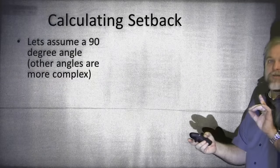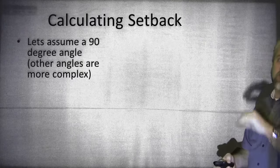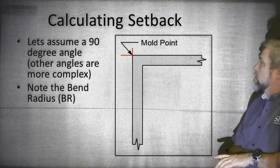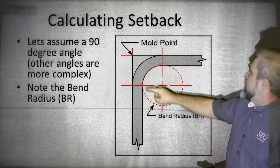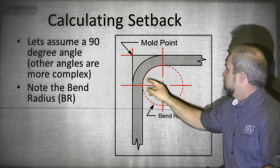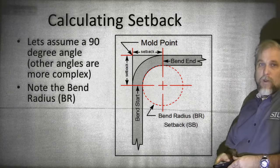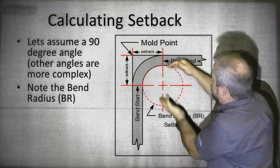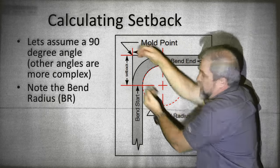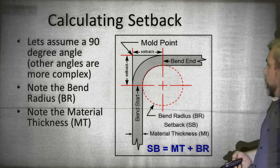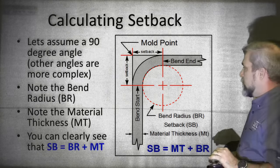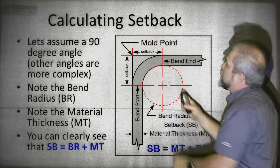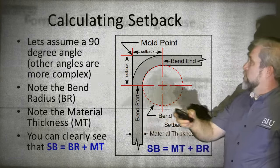For this lecture, I'm going to assume a 90-degree angle. Here's our theoretical mold point bend — you'll notice a nice square corner. But in reality, we have to bend it around a radius. Once we know the bend radius, you can see that the amount of setback is going to be equal to the bend radius plus the material thickness. We can write that as: setback equals bend radius plus material thickness. If you take the material thickness and the bend radius and add them together, you know how far you need to begin before and end after the corner.